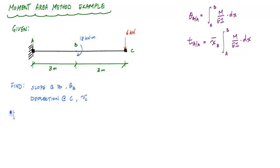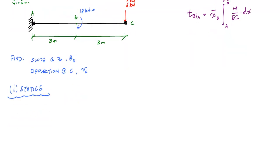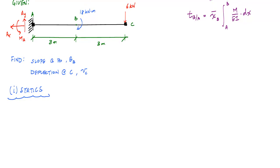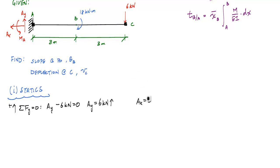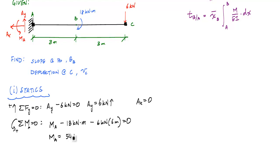The first thing I want to do is some basic statics and calculate reactions and draw the shear and moment diagram of this structure. I'm going to label the reactions at A and use my equilibrium equations. Sum of forces in the vertical direction: AY minus 6 kilonewtons equals 0, so AY is 6 kilonewtons upwards. AX equals 0. Taking moments about point A: minus 18 kilonewton meters minus 6 kilonewtons times 6 meters equals 0, giving MA equal to 54 kilonewton meters counterclockwise.